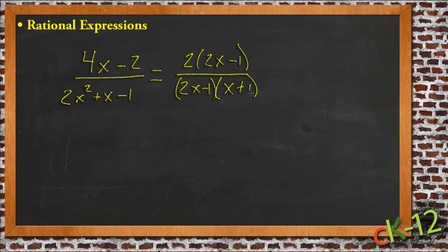And if we look at this expression at this point, there are two values that x cannot be. x can't be positive 1 half, because we get 2 times 1 half, which would be 1, and 1 minus 1 is 0. So x can't be 1 half. And it also can't be negative 1, because negative 1 plus 1 would be 0. So there's two values that x can't be at this point.